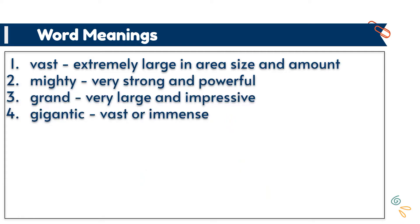Now, to understand it better, let us discuss the new words which we have come across while reciting the poem. Number one: vast, which means extremely large in area, size, and amount. Mighty means very strong and powerful. Grand means very large and impressive. Gigantic means vast or immense.